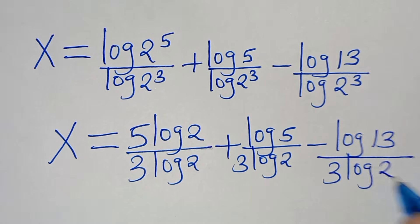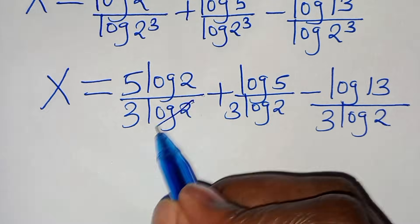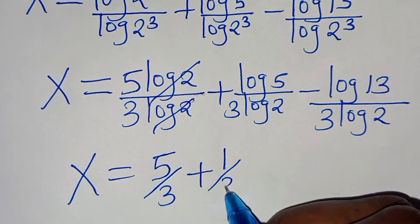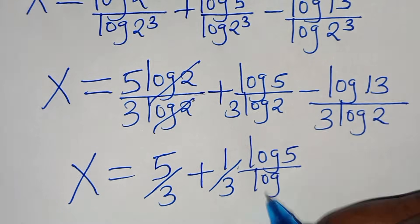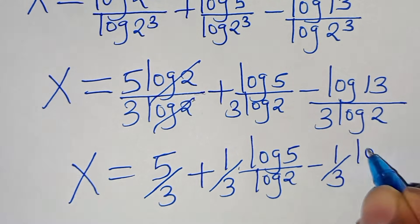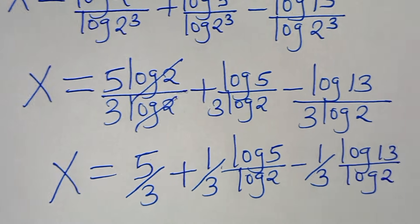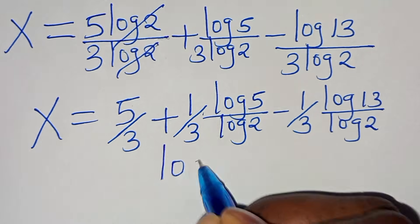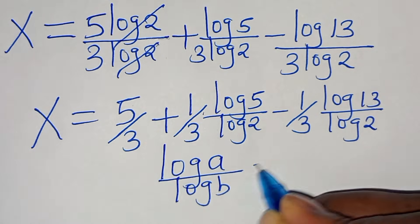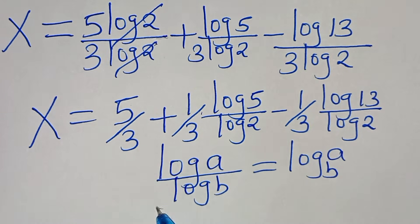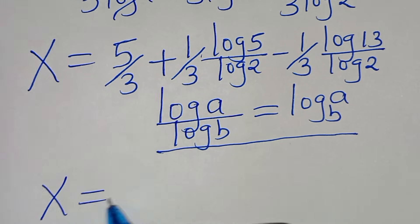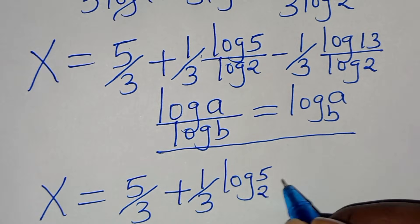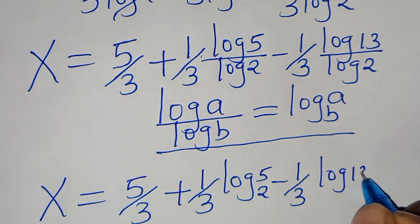The log(2) terms cancel, giving x = 5/3 plus (1/3)·log_2(5) minus (1/3)·log_2(13). Here log(5)/log(2) = log_2(5) and log(13)/log(2) = log_2(13), using the change-of-base property.